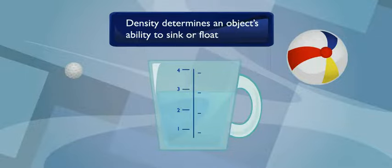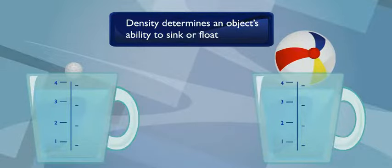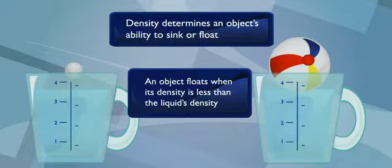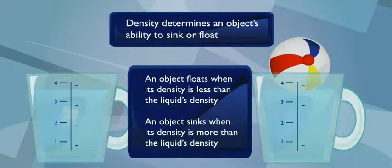Yeah. Well, things float if they are less dense than the liquid that they're placed in. If you put the beach ball and the golf ball in water, the beach ball would float because its density is much lower than the water's. The golf ball's density is higher, so it'd sink.